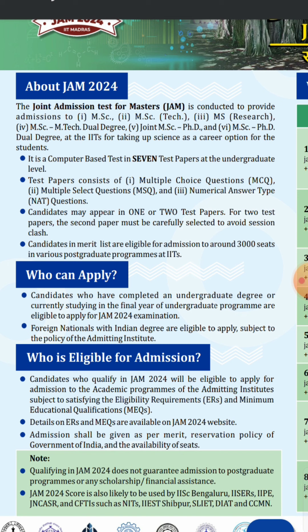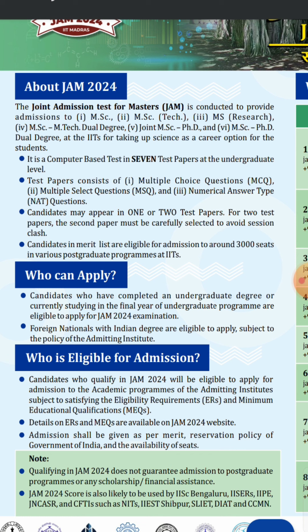For two test papers, the second paper must be carefully selected to avoid scheduling conflicts. Candidates with a completed undergraduate degree or studying in their final year can apply for JAM 2024. Candidates who qualify will be eligible to apply for admission to academic programs at the admitting institutes. Minimum education qualifications and all details are given in the brochure.